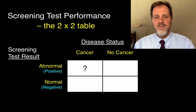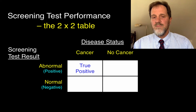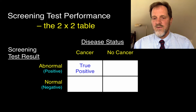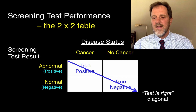A person who has cancer and has an abnormal or positive test result — that's a true positive test. A patient who doesn't have cancer and has a normal or negative test result — that's a truly negative test result. I think of this as the good diagonal, the test-is-right diagonal.